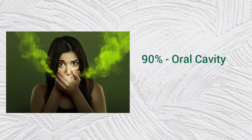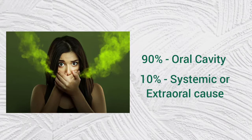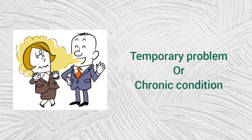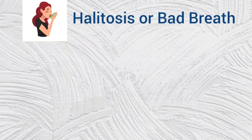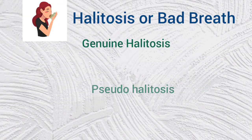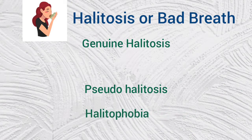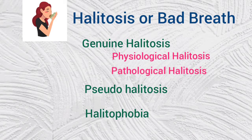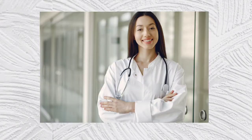Almost 90% of bad breath has its origin in the oral cavity, and the remaining 10% is due to systemic or extraoral causes. Bad breath can be a temporary problem or a chronic condition. Halitosis is classified into genuine halitosis, pseudo-halitosis, and halitophobia. Genuine halitosis is further classified into physiological halitosis and pathological halitosis.